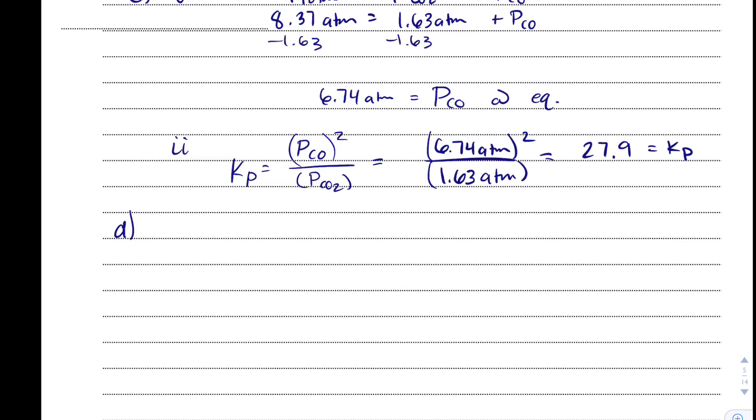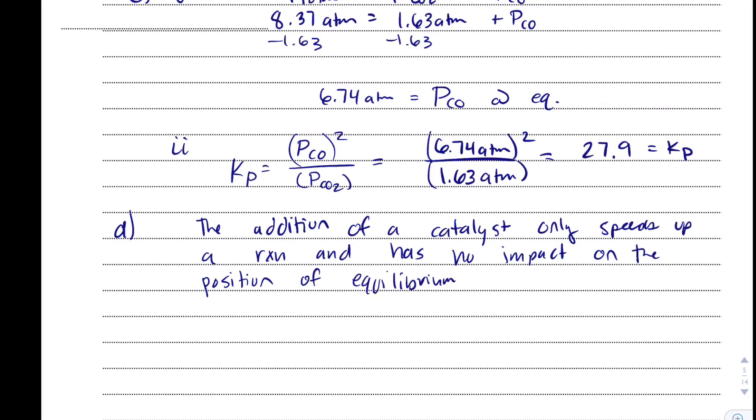And what I know about the equilibrium constant is that the only thing that changes the equilibrium constant is temperature. So catalyst is not impacting the temperature. Catalyst is something that gets you to equilibrium quicker, but it doesn't change any of your equilibrium values. So I would say that the addition of a catalyst only speeds up a reaction and has no impact on the position of the equilibrium or the equilibrium constant.